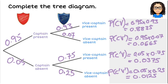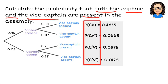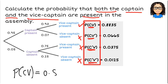Now that we have that set out, we can go and answer some questions. Calculate the probability that both the captain and the vice captain are present. We've got two criteria: the captain being present and the vice captain being present. The first combination — captain present and vice captain present — works. The others don't satisfy both criteria. So the probability of both the captain and vice captain being present is 0.8835.